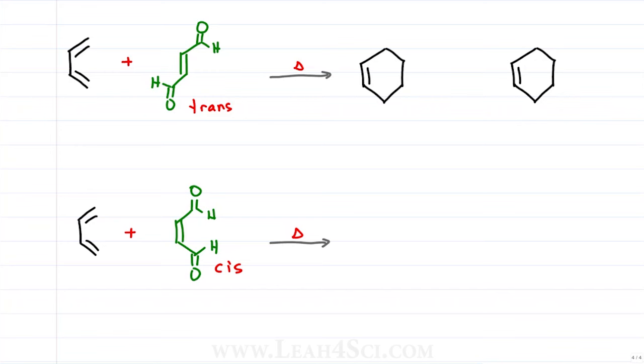Now what happens if I have two substituents on my dienophile, such as two aldehydes in opposite or trans configuration or two aldehydes in the same or cis configuration. The cis and trans stereochemistry will be retained. And once again, I have the option of drawing it two different ways. For the trans option, I can put the upper aldehyde out and the lower one in or the opposite, giving me two different products that in this case are enantiomers of each other.